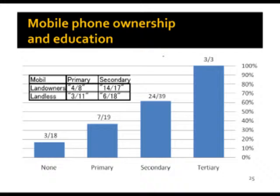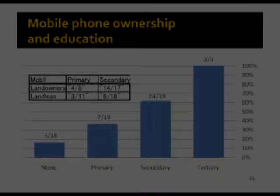Although literacy is not a necessary condition to use a mobile phone, most people, even those who are educated in this Indian community, never use texting. They just use the phone for calling their friends or family. Both socioeconomic status and education are important factors.